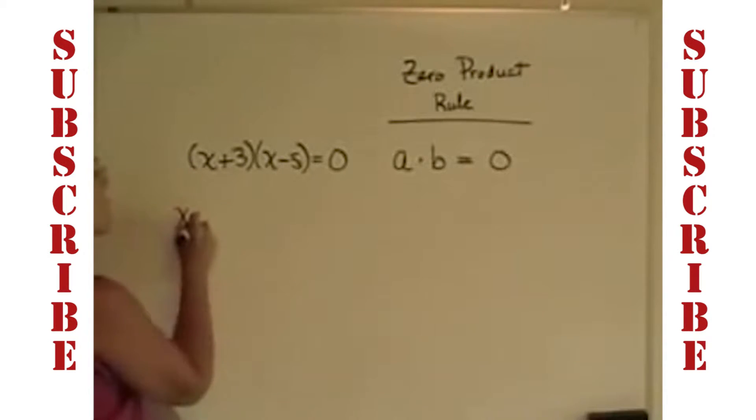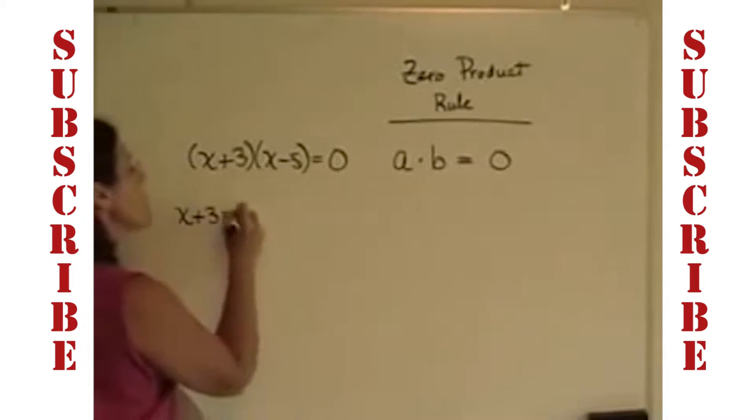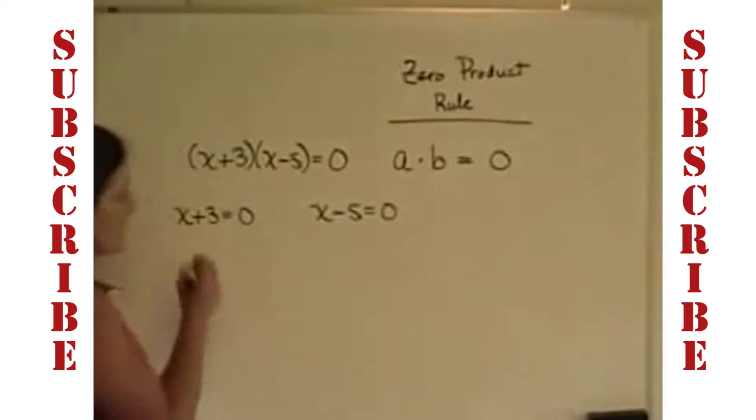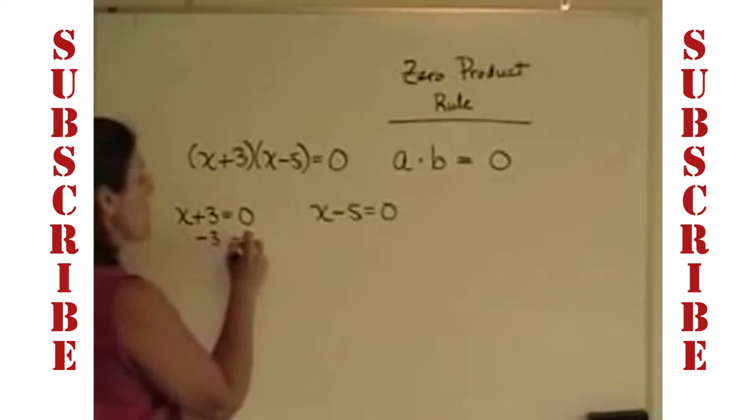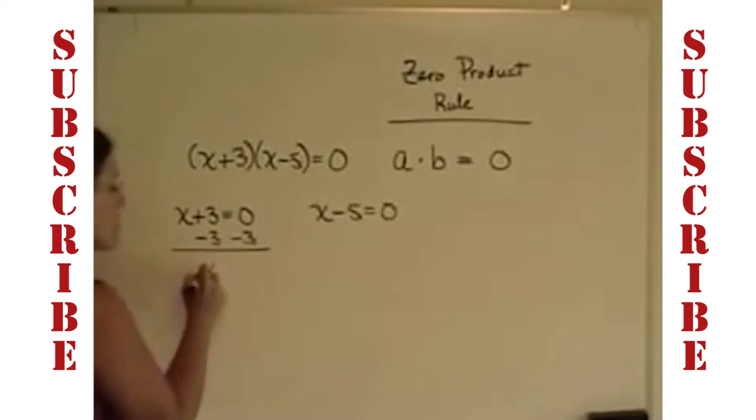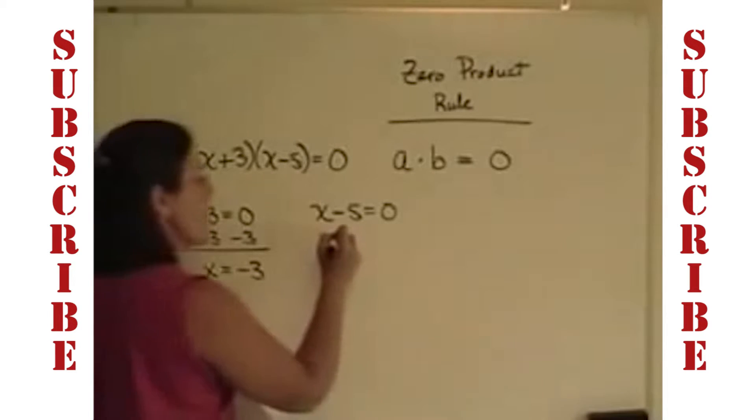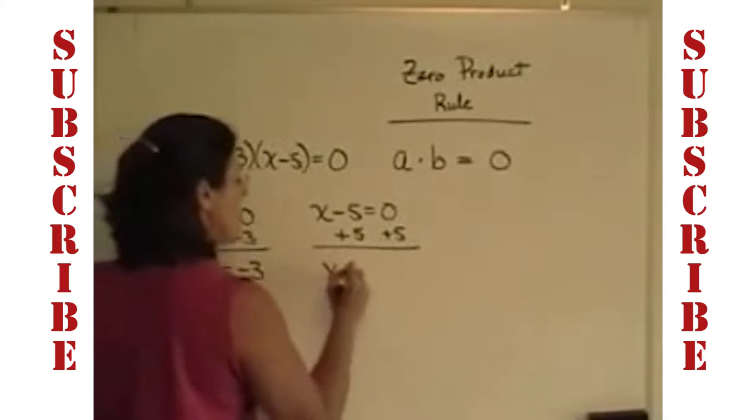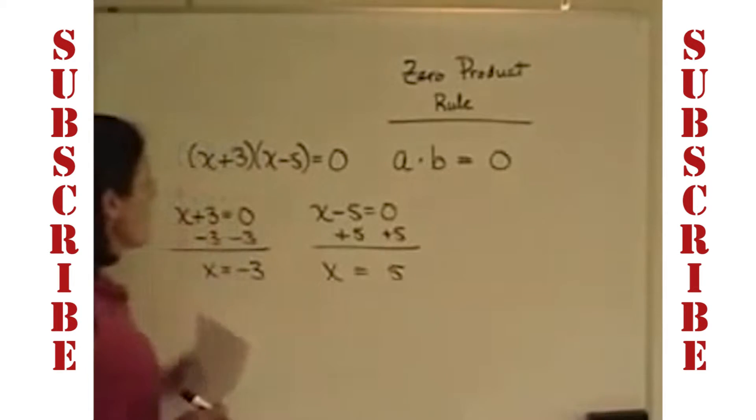So what we do is we take those factors, we set them equal to zero, and we solve these linear equations very simply. I'm going to show the steps, but by now you're not even showing that work. I'll subtract 3 from both sides, and I see that a negative 3 will work in this equation. Over here, I'm going to add 5 to both sides, and I see that 5 will work in this equation.